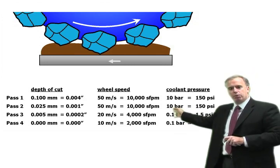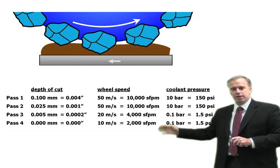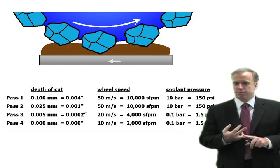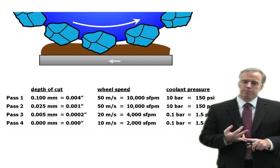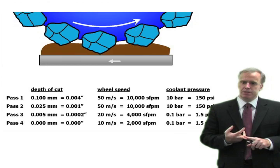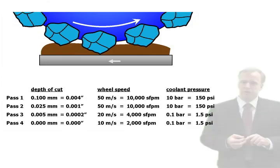Keep our pressure down to 0.1 bar or 1.5 psi, just a trickle, or if you even want to turn the coolant off, you can do that. Take that spark out pass. You won't get that hydroplaning. Your grits will bite into the workpiece, and you'll be able to remove that last bit of material without the hydroplaning effect.